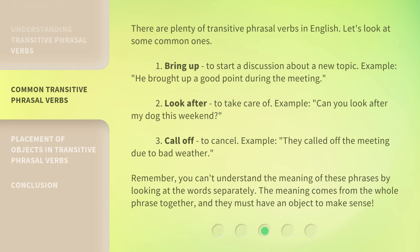There are plenty of transitive phrasal verbs in English. Let's look at some common ones. First, 'bring up' — to start a discussion about a new topic. Example: 'He brought up a good point during the meeting.' Second, 'look after' — to take care of. Example: 'Can you look after my dog this weekend?' Third, 'call off' — to cancel. Example: 'They called off the meeting due to bad weather.' Remember, you can't understand the meaning of these phrases by looking at the words separately — the meaning comes from the whole phrase together, and they must have an object to make sense.